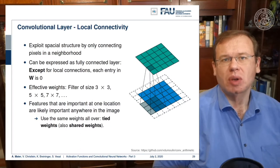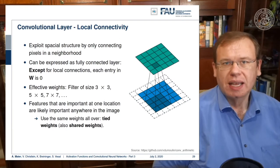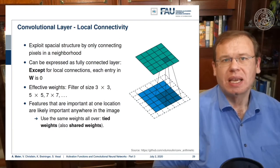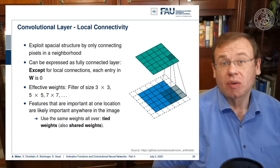They are then called tied or shared weights. If you do this, you're essentially modeling a convolution.